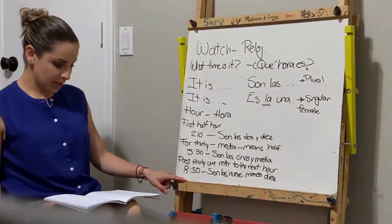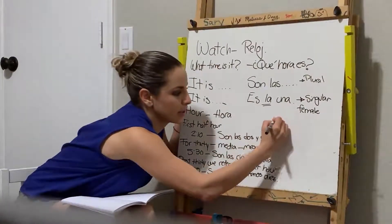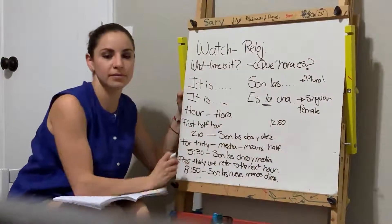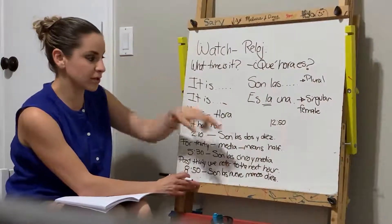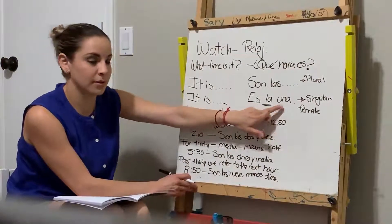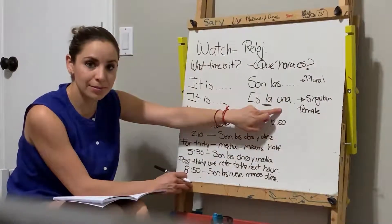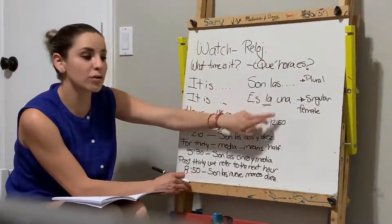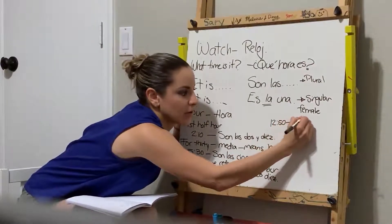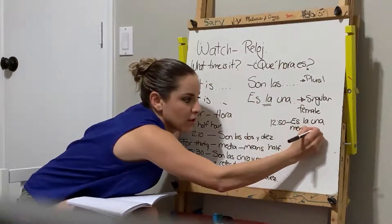If we're going to say that it's twelve fifty, this one changes because you're going to use 'la una.' So we're going to say: es la una menos diez. Singular — es la una menos diez.